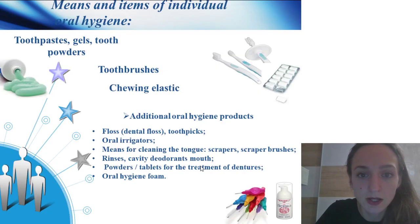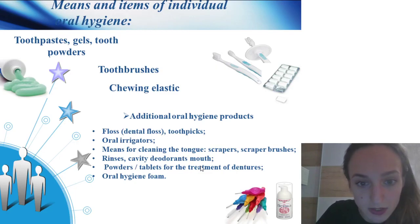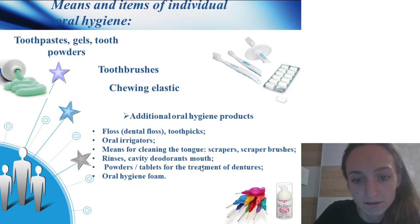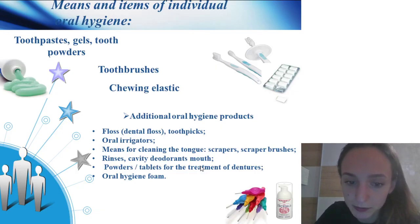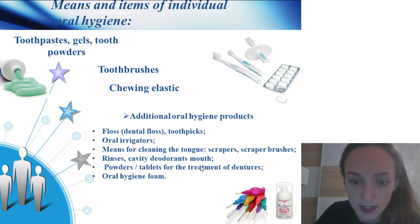Means and items of individual oral hygiene include: toothpaste, gels, tooth powders, and additional oral hygiene products such as floss, oral irrigators, means for cleaning the tongue, rinse aids for the oral cavity, deodorant powders, and oral hygiene forms.